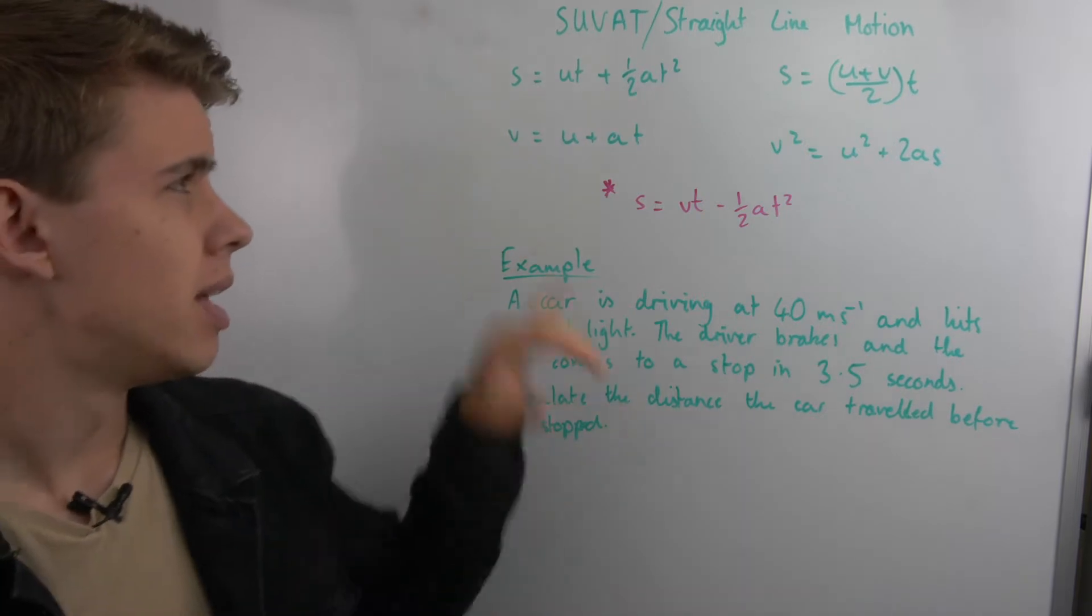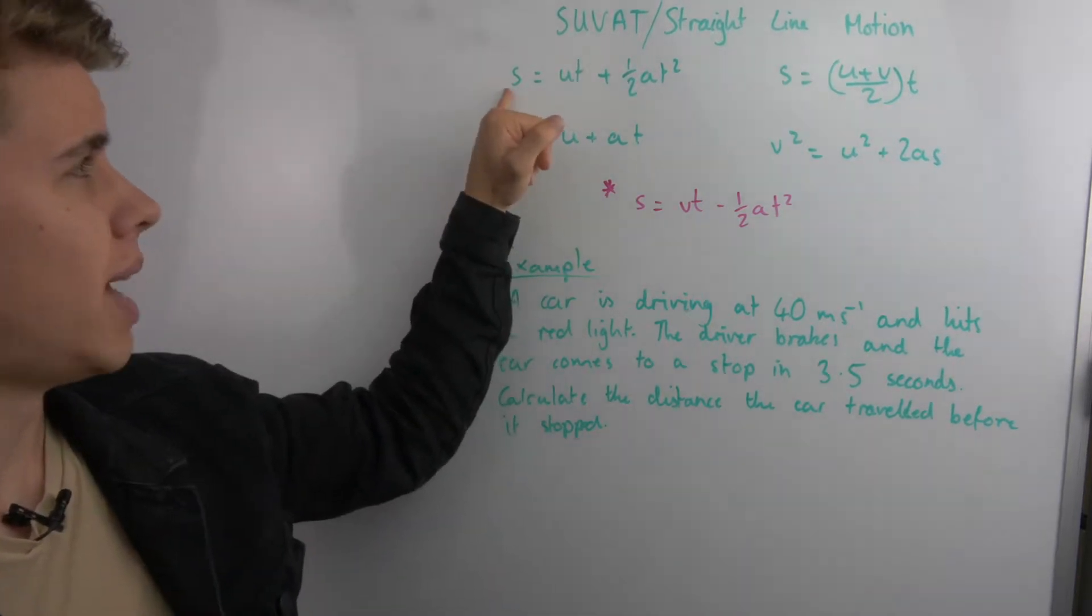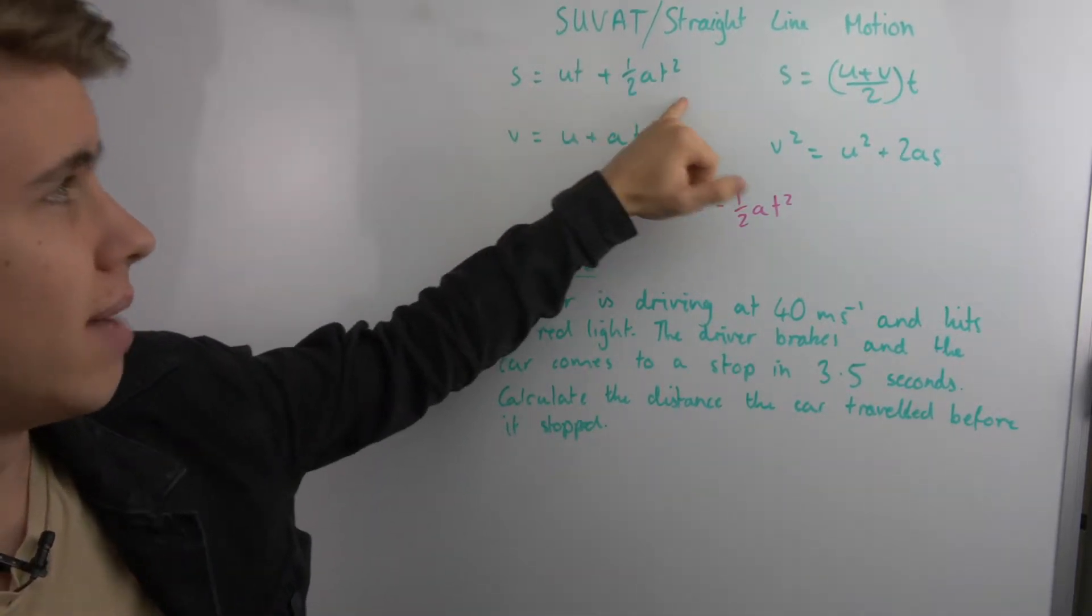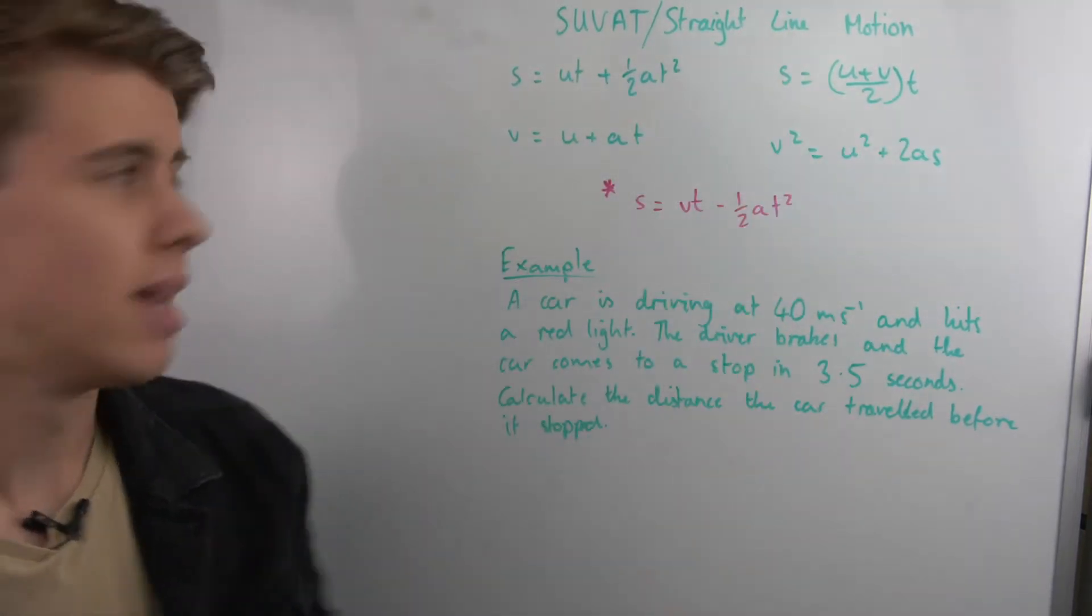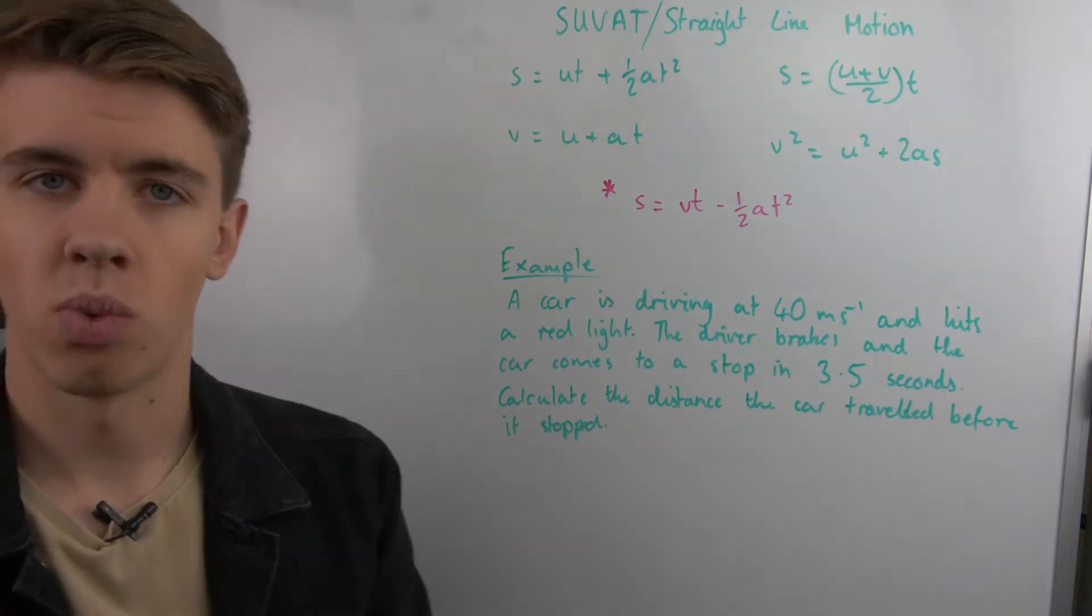So for example, if we look at this first one, we have S, we have U, we have A, and we have T, but we have no V. In the second one, we have S, U, V, T, but we don't have A. All of these will miss one of these variables.